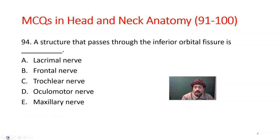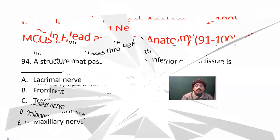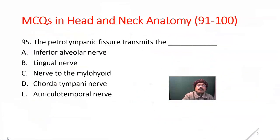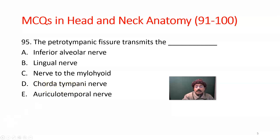Then we go to question 95. The petrotympanic fissure transmits what? The choices are auricular nerve, lingual nerve, nerve to mylohyoid, chorda tympani nerve, and auriculotemporal nerve. The answer should be D, chorda tympani nerve.